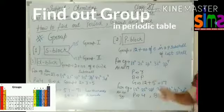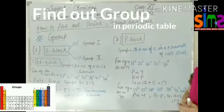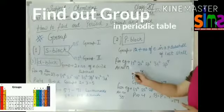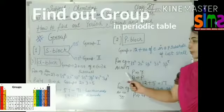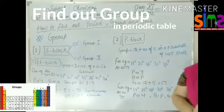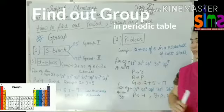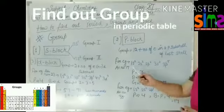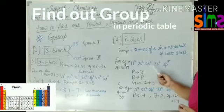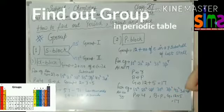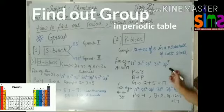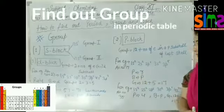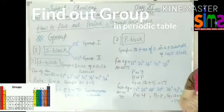s के बाद p-block आता है। p-block का कैसे बताएंगे — जैसे मैंने आपको example दिया: atomic number 17 का configuration लिखा — 1s2, 2s2, 2p6, 3s2, 3p5 — बच्चो last में 3p5 आया है।